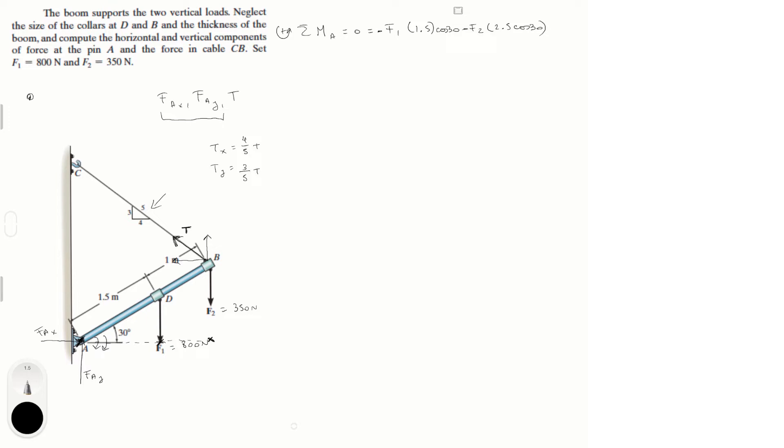So the 4 over 5 which is the x component Tx, T times 4 over 5. The x component you have to multiply it by the distance from here to A, and that distance is equal to 2.5 times the sine of 30.